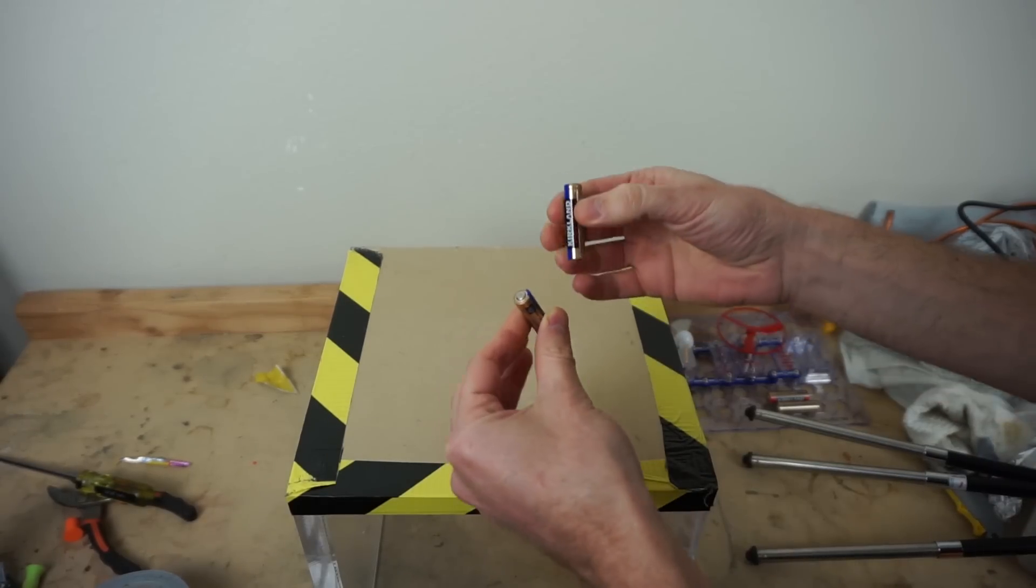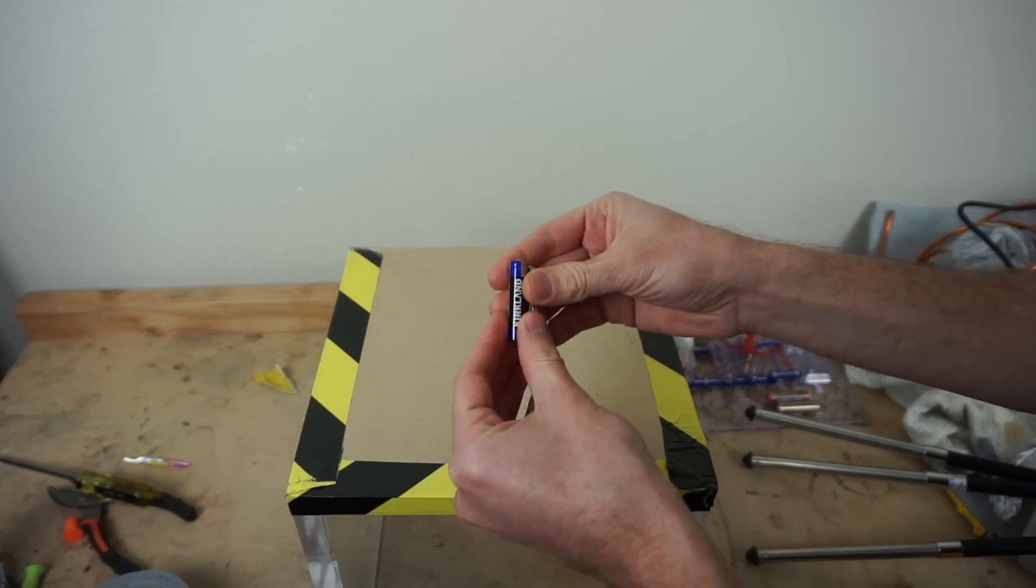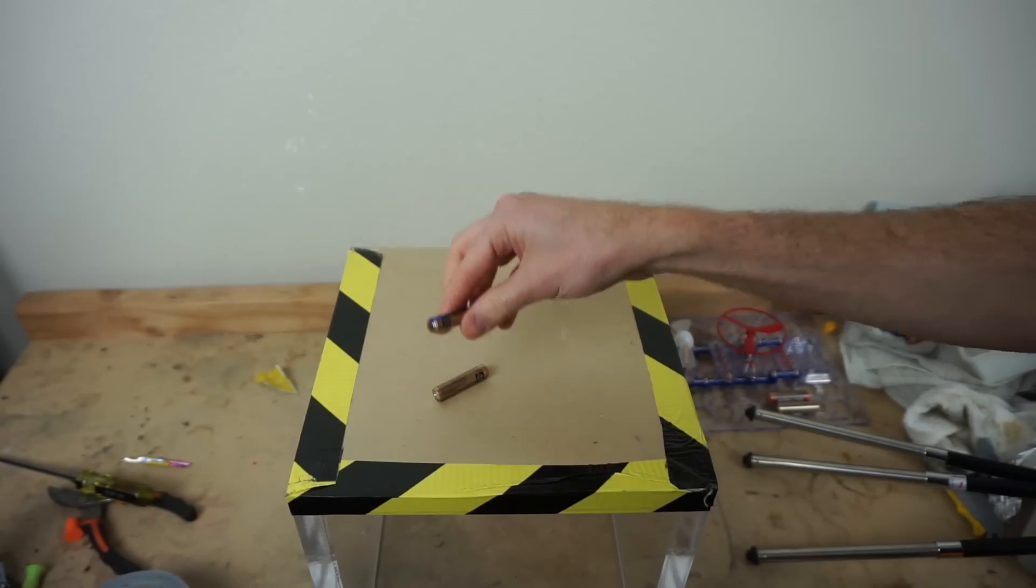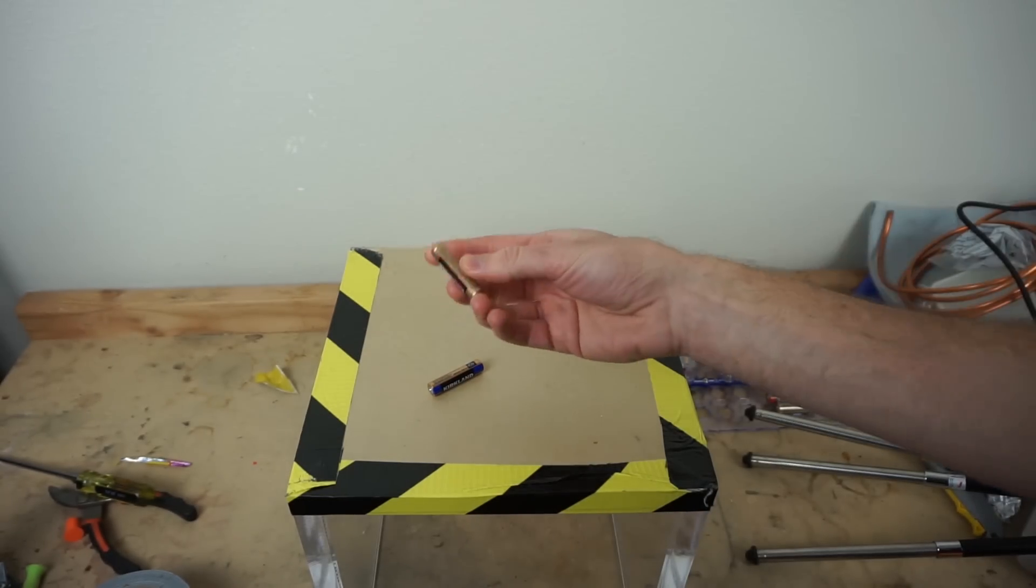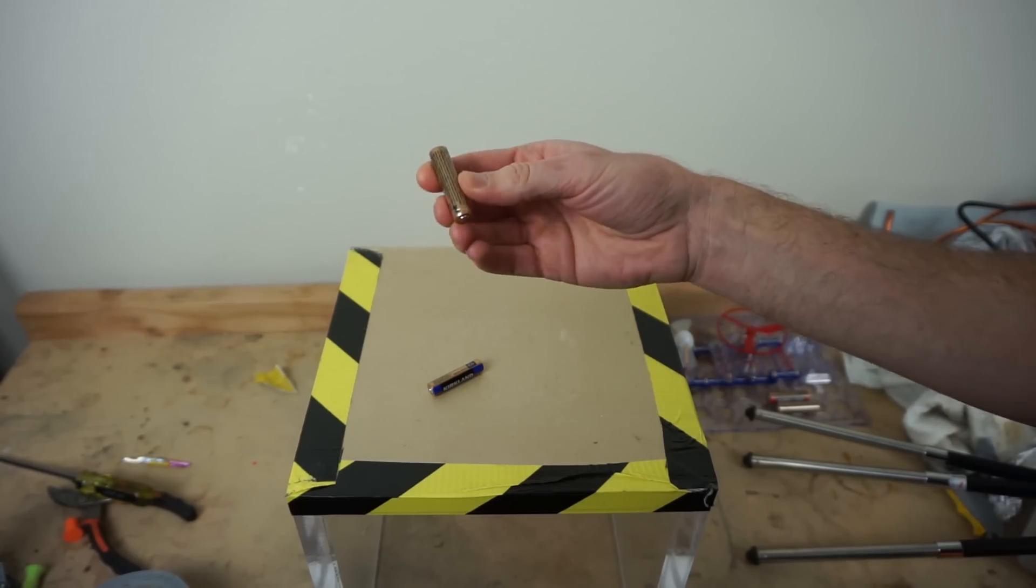So the reason these don't change weight is because this is a closed system. And these are alkaline batteries. So basically the reaction is that zinc turns to zinc oxide, and it transfers electrons from one electrode to the other electrode. But there's no mass at all lost from the system during this. So this is a closed mass system.